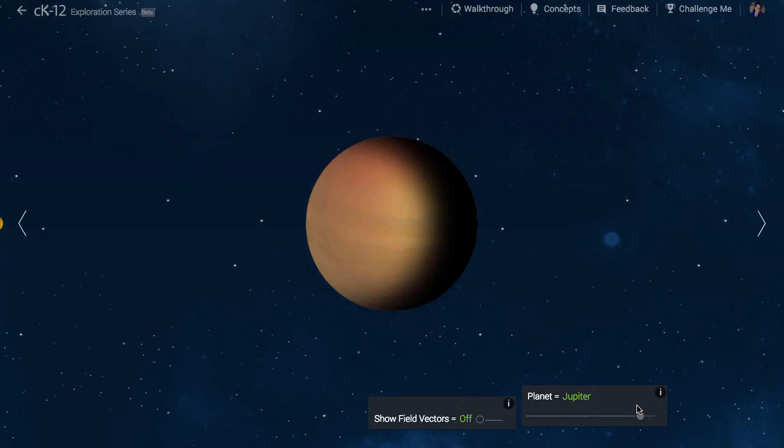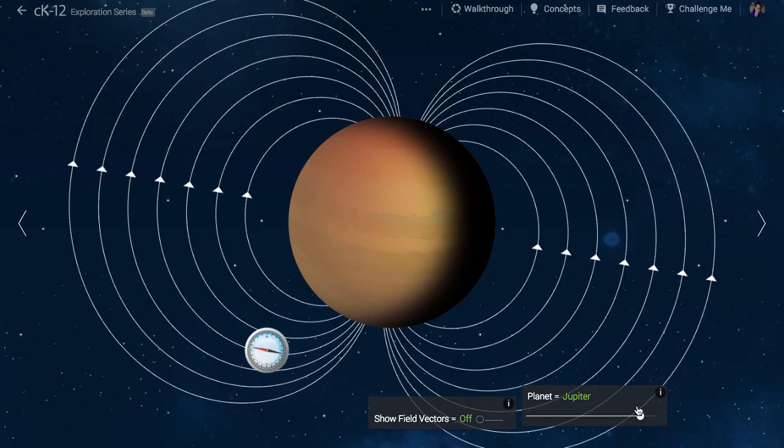Jupiter has a very strong and big magnetic field, actually extending far beyond what is shown here. By some accounts, Jupiter's magnetic field is the largest object in the solar system, even bigger than the Sun.